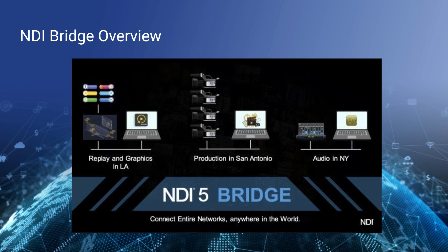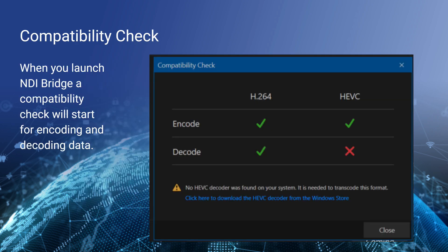For example, we might have replay graphics in Los Angeles, a production studio in San Antonio, and an audio producer in New York — we can connect entire networks over the public internet anywhere in the world. When you first launch NDI Bridge it will do a compatibility check, and it's important to think of the bridge not just as an app but almost as a server, because you need a computer powerful enough to do all the encoding and decoding.